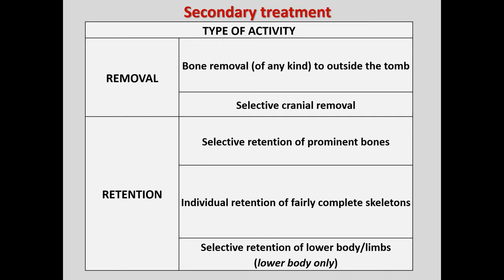As already noted, we detect two main types of activities: the retention of bones inside the grave, and bone removal from the tomb to another location outside the grave. These two patterns are not mutually exclusive — they usually take place together but to different degrees. Both forms include a variety of specific acts that reflect specific choices with different motivations.